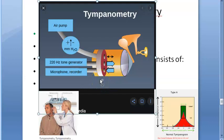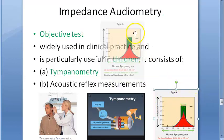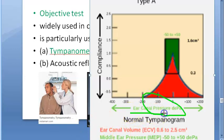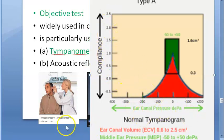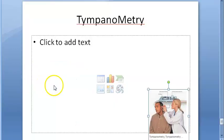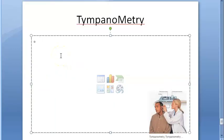Some diagrams here show the three components: an air pump, a tone generator, a microphone, and a recorder. This is a normal tympanogram. On the tympanogram you see pressure on one axis and compliance on the other. Whatever is shown in red is the ear canal volume, and this is the middle ear pressure.